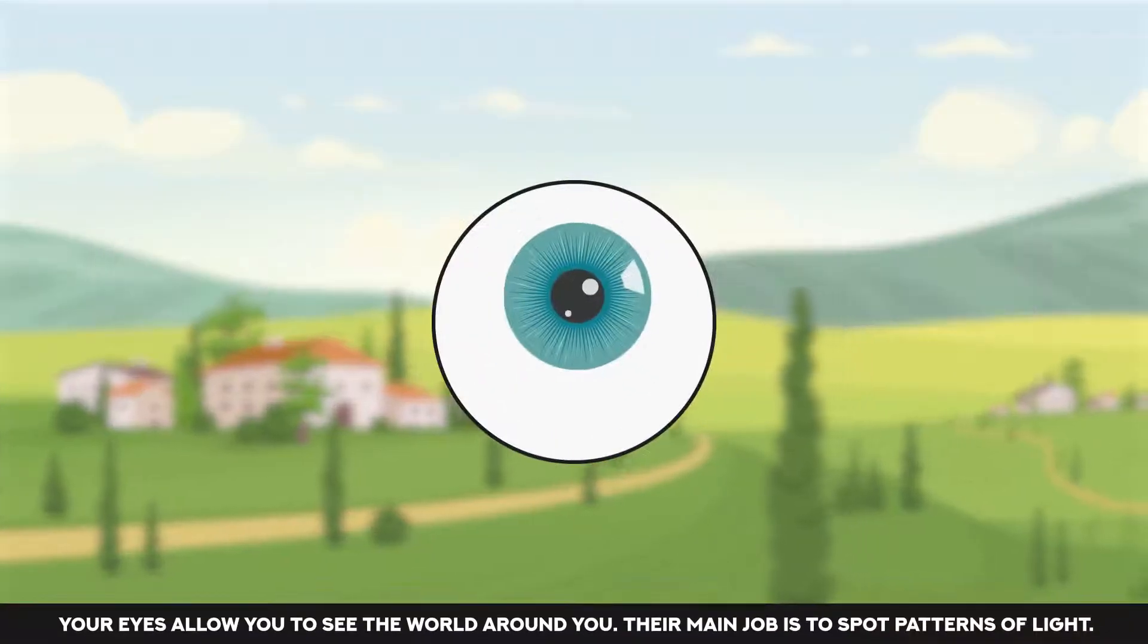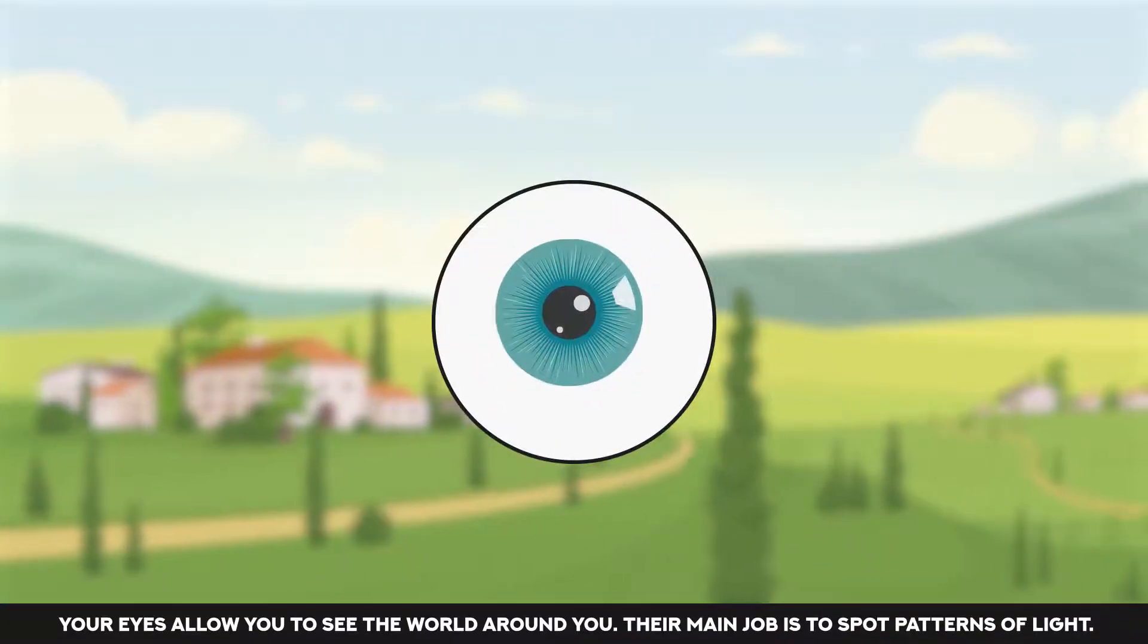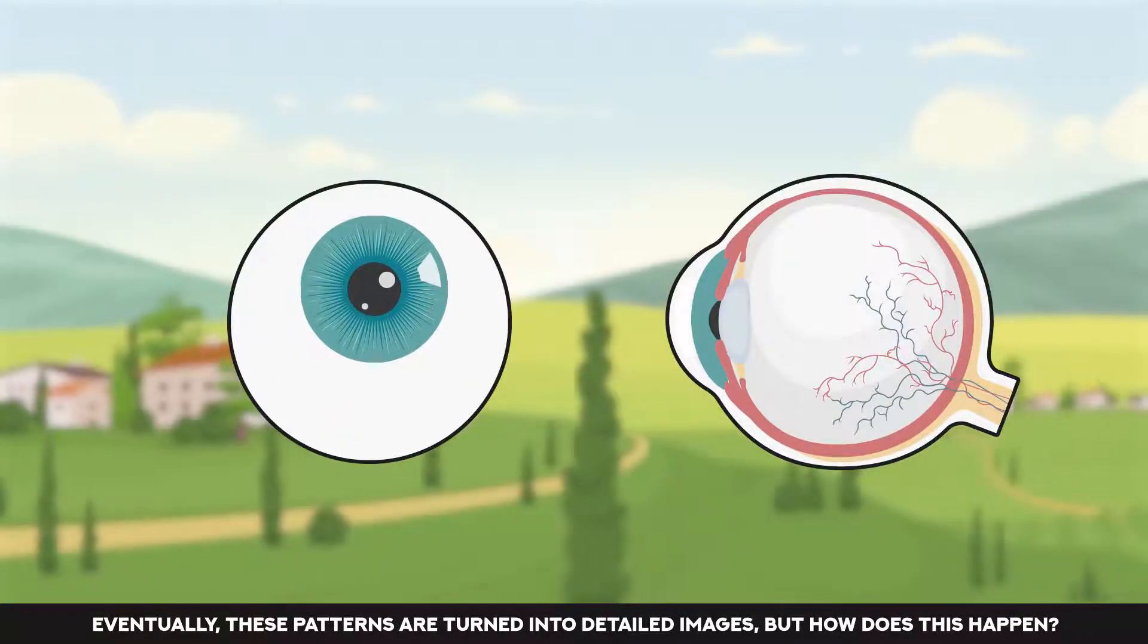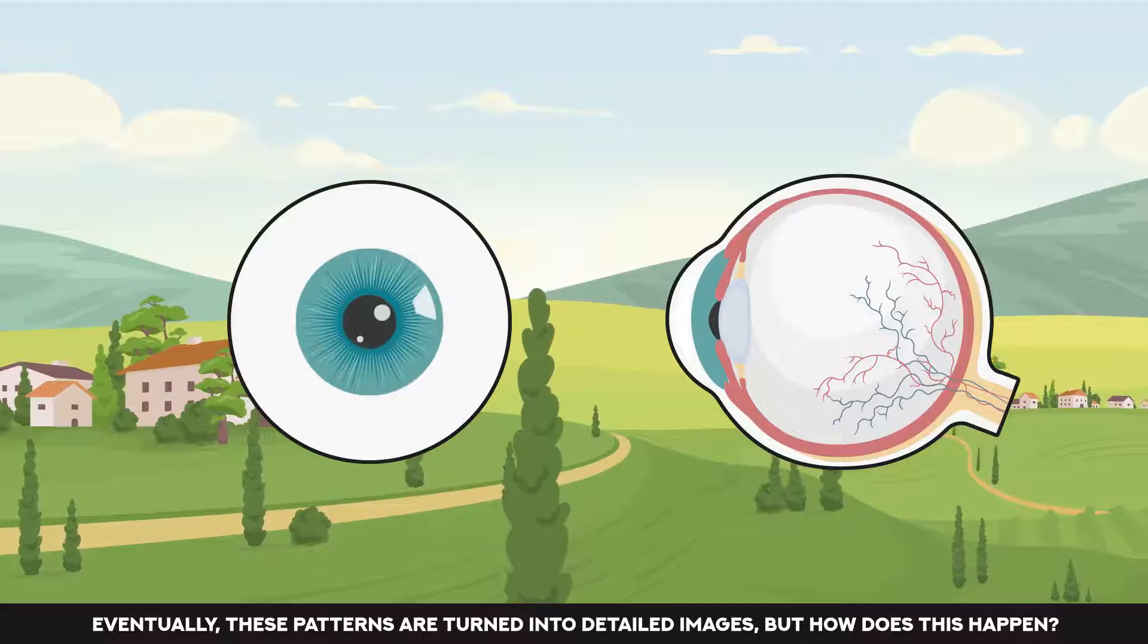Your eyes allow you to see the world around you. Their main job is to spot patterns of light. Eventually, these patterns are turned into detailed images. But how does this happen?